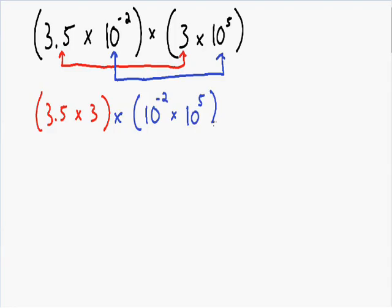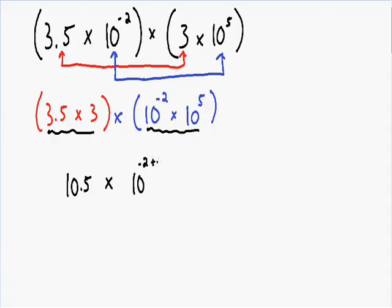So now let's simplify the expression. In red we have 3.5 times 3, which is 10.5. And in blue, we have 10 to the negative 2 times 10 to the fifth. Once again, we're multiplying two exponents with the same base, so we can simplify by adding the exponents. We have negative 2 and we need to add that with our other exponent of 5, giving us 10.5 times 10 with negative 2 plus 5 in the exponent.